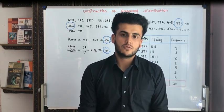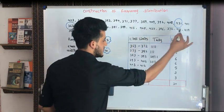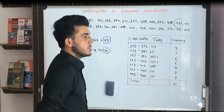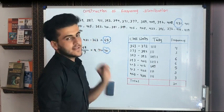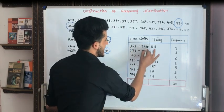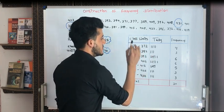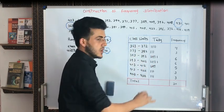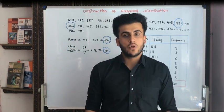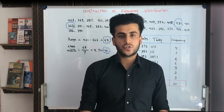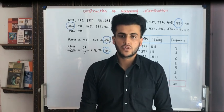What is frequency distribution? Frequency distribution is a table — you are looking at this table. Frequency distribution is a table containing the class intervals. These are called class intervals: 363 to 372, 373 to 382, and continuously going on. These are the class intervals, which are very important in the topics of statistics and frequency distribution.